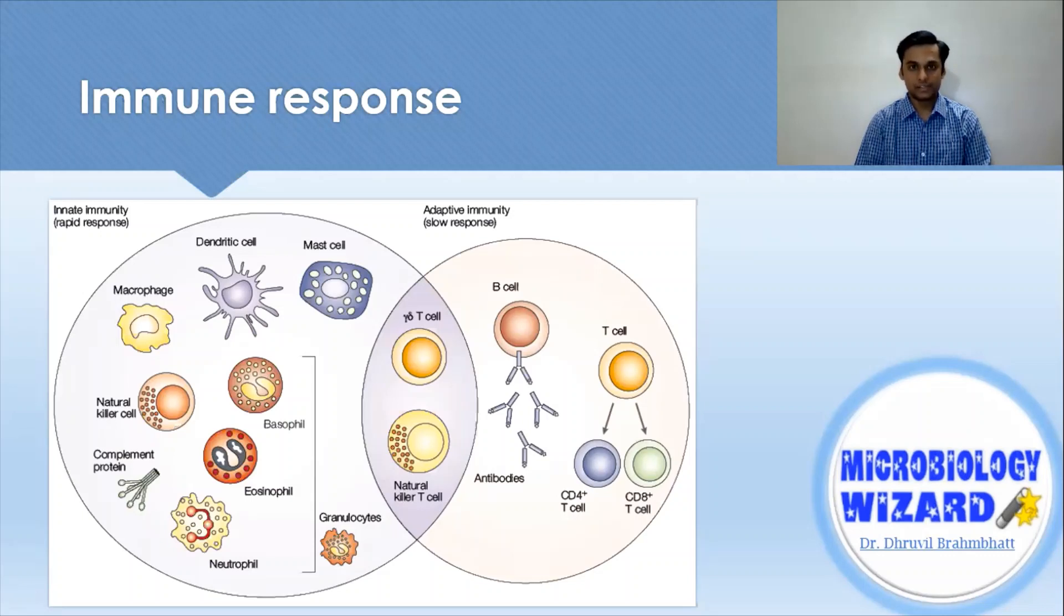However, when it fails, that is when the second line of defense comes into the picture, which is adaptive immune response.